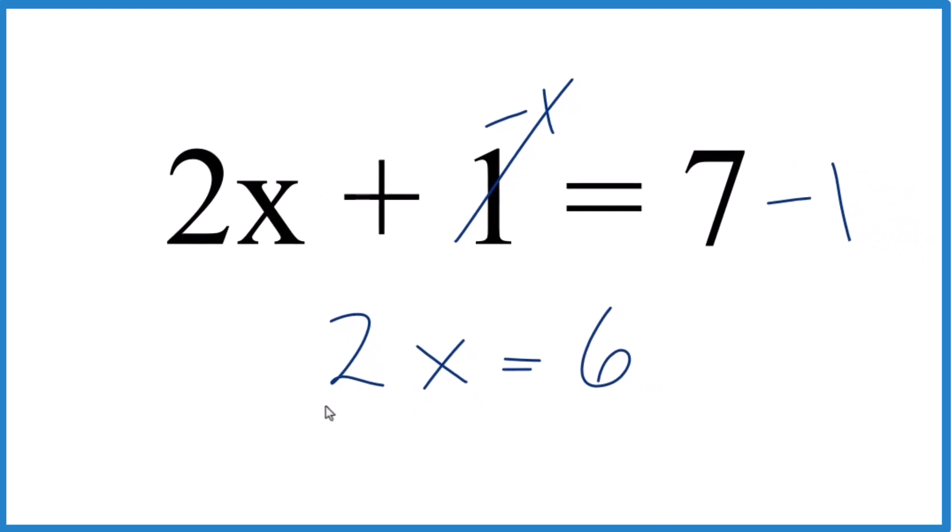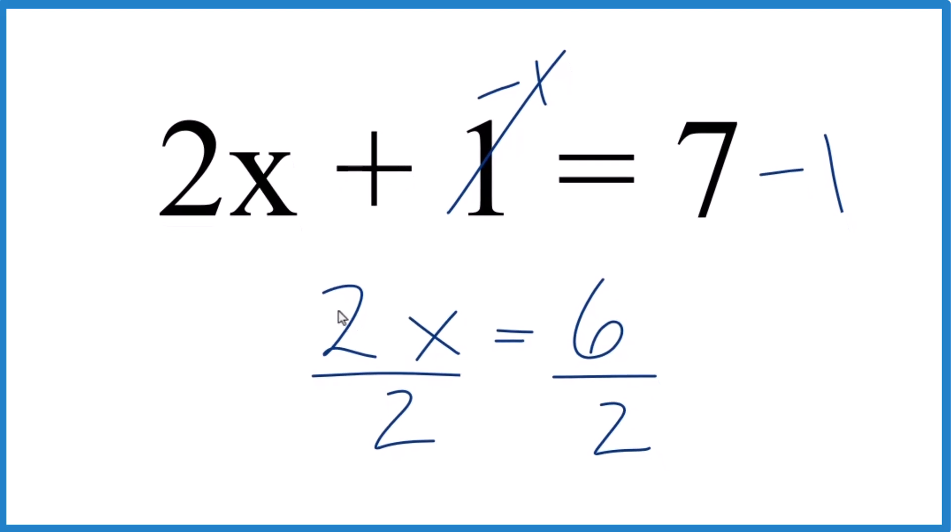To get x by itself, we divide both sides by 2. 2 on the top and the bottom, that's just equal to 1. 2 divided by 2 is 1, so we have 1x. We don't really write the 1 in front of the x.